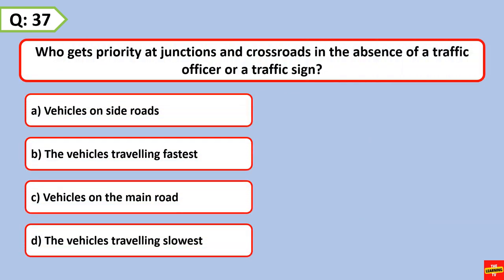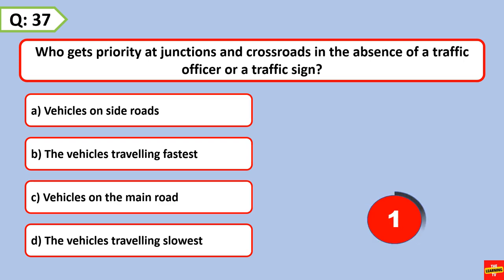Who gets priority at junctions and crossroads in the absence of a traffic officer or a traffic sign? Vehicles on the main road.